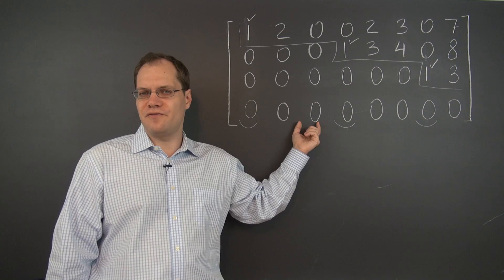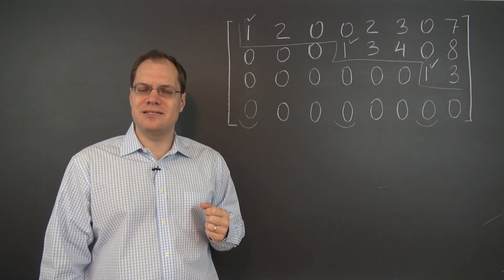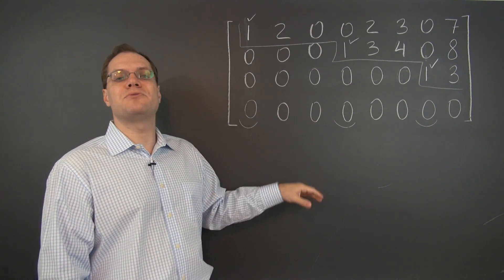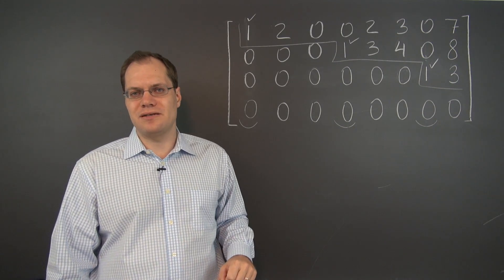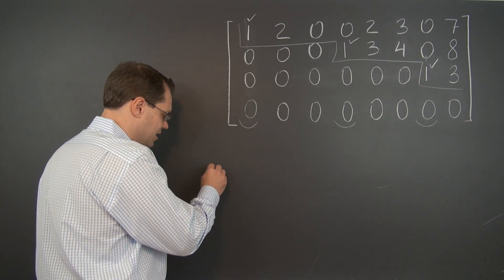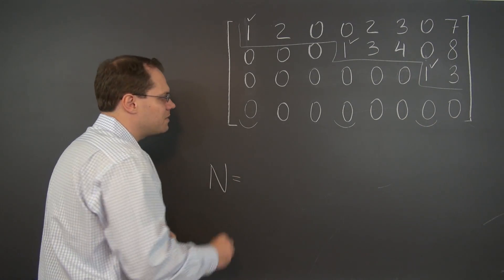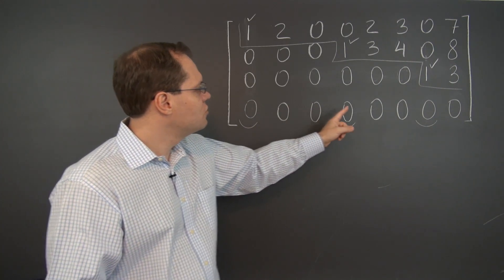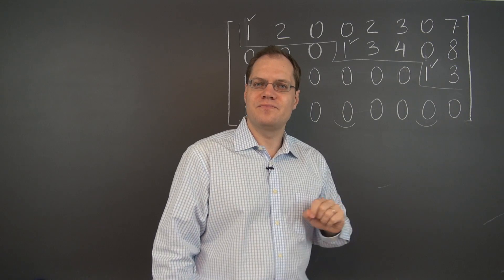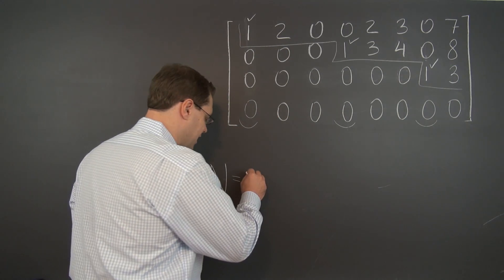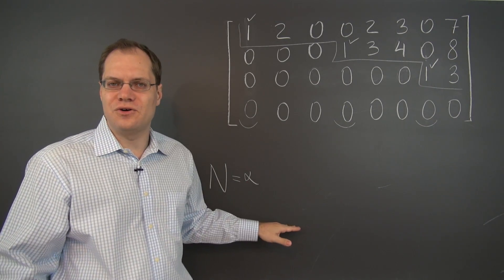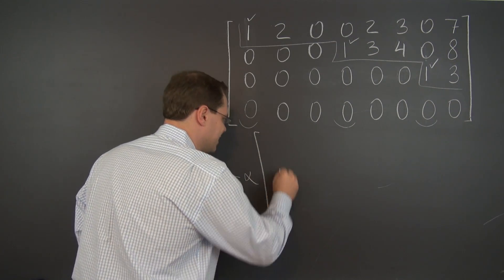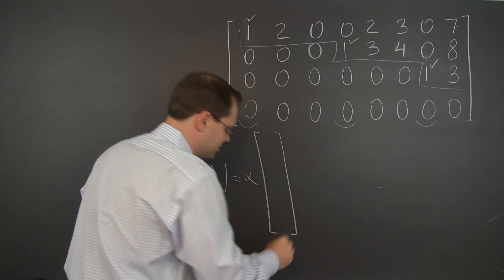Just march through the row-reduced echelon form of the matrix one non-pivot column at a time, realize its relationship to the pivot columns, and express that relationship as an element in the null space. The null space in this case is five-dimensional, because we have five non-pivot columns. We will have five elements, and each one of them is relatively tall because it has eight elements, so I will write relatively small.